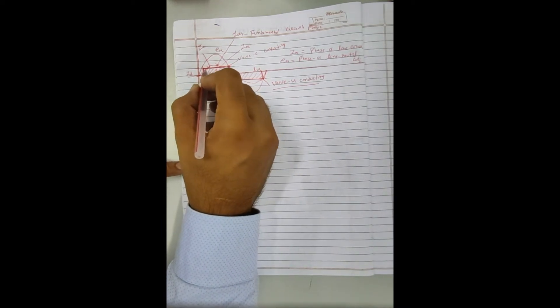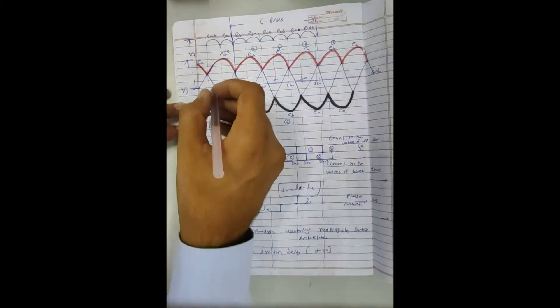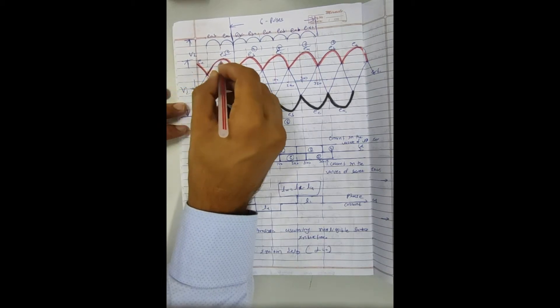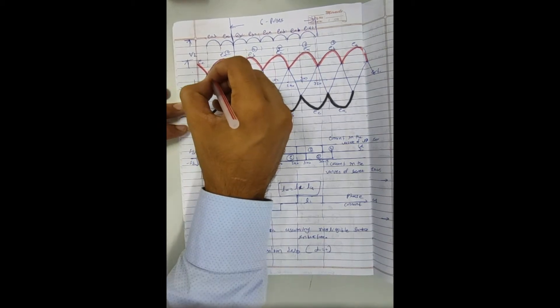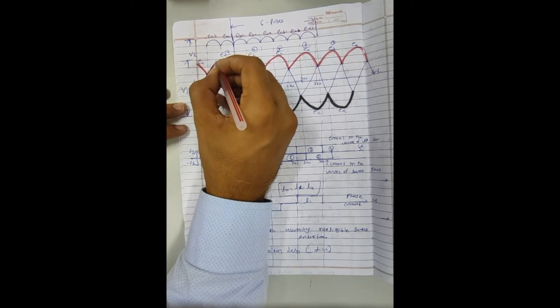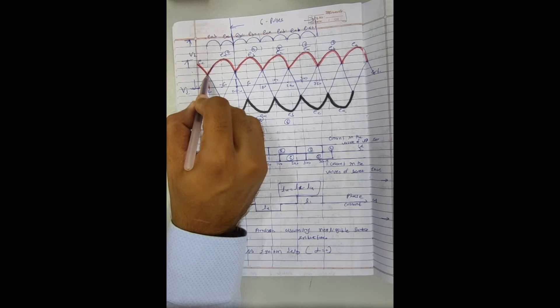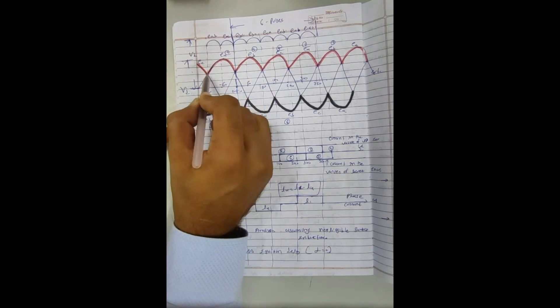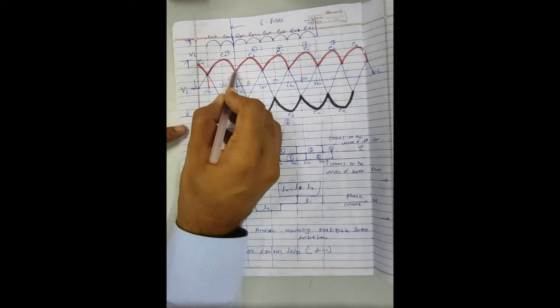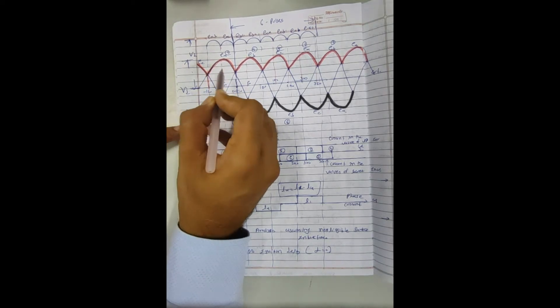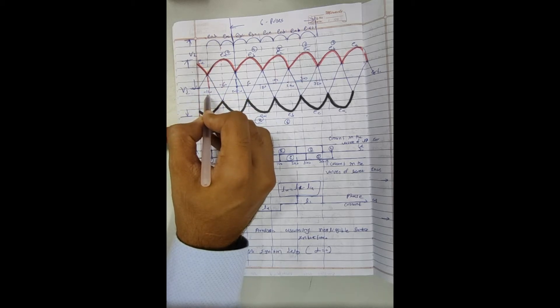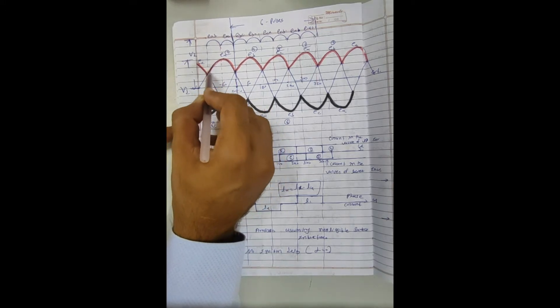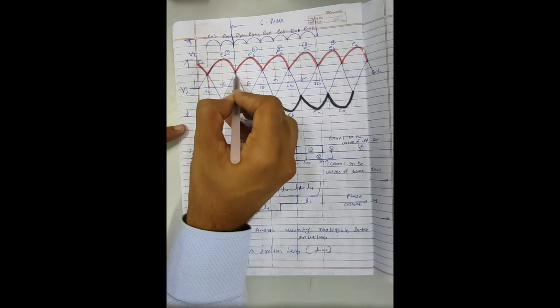Valve number one is starting from the phase crossover point, so alpha is equal to zero degrees. At the phase crossover point between C and A phase, valve one starts conducting. This crossover point is at minus 120 degrees. From minus 120 degrees to zero degrees, valve one conducts and gives positive current, producing this rectangular waveform. Same way, valve number three starts from zero to alpha, beginning its conduction with delay angle alpha from the zero-degree phase crossover point.